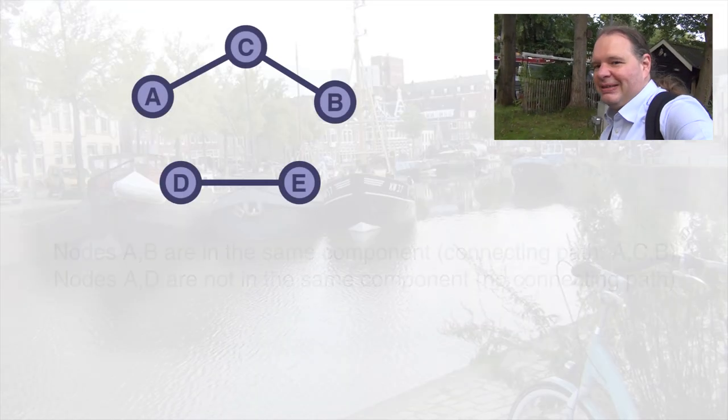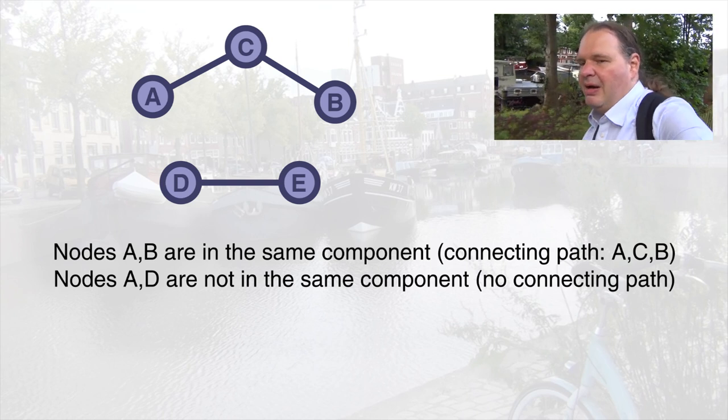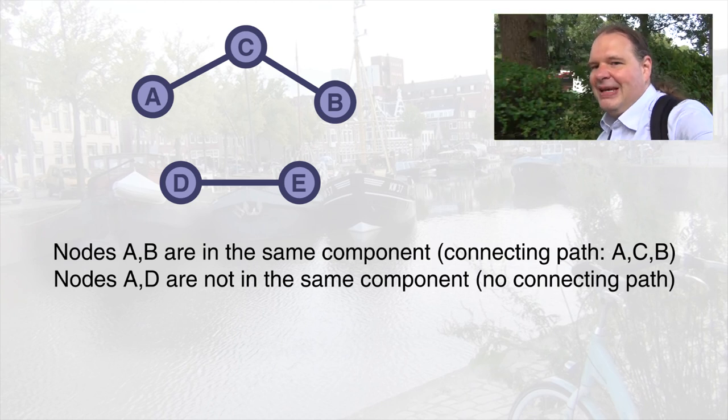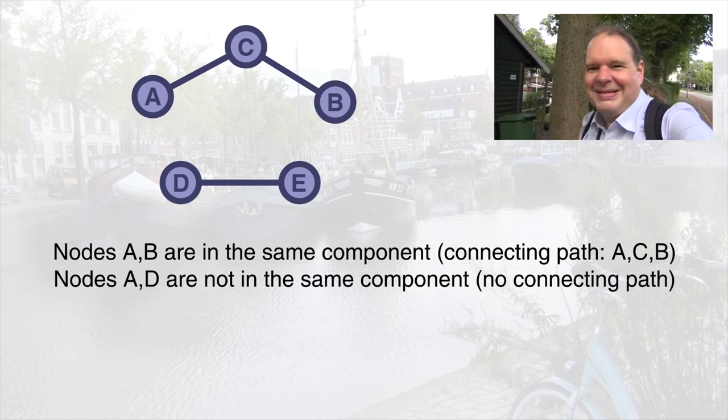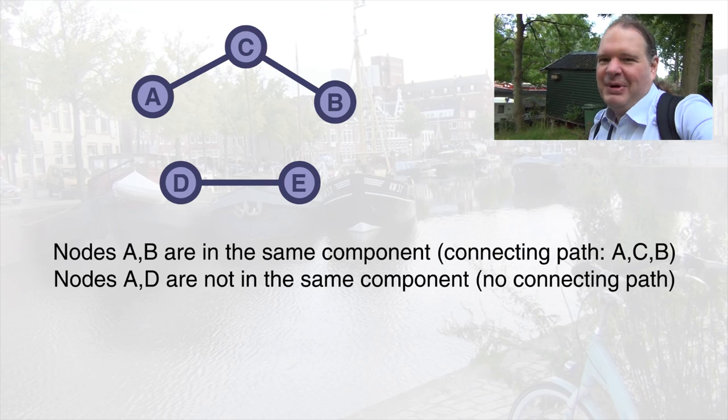Paths actually play a big role in the mathematical study of networks, because they allow us to define certain other terms. In the last lecture, I just said components are the connected bits — that was a colloquial definition that hopefully made sense, but it's hardly precise. Now that we have paths, we can make it more precise: two nodes A and B are in the same component if and only if a path exists that has these two nodes as its endpoints.